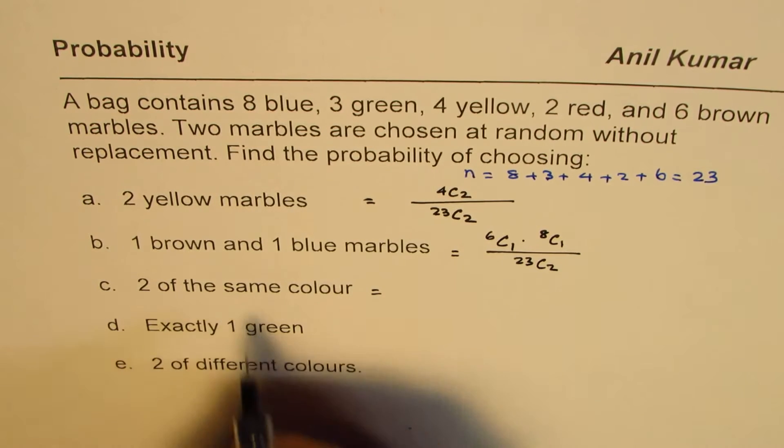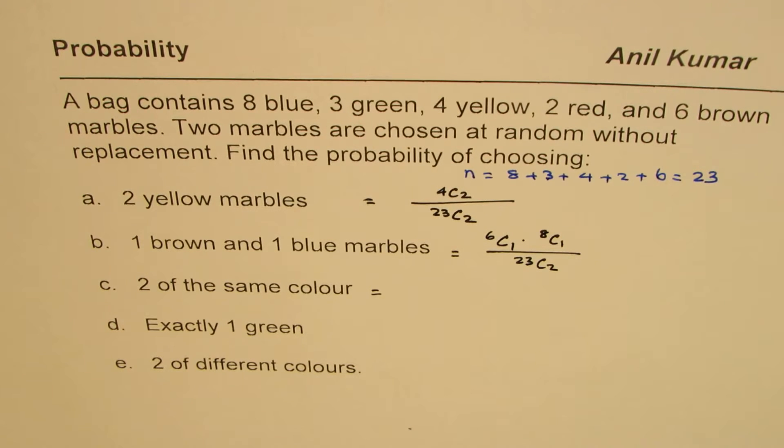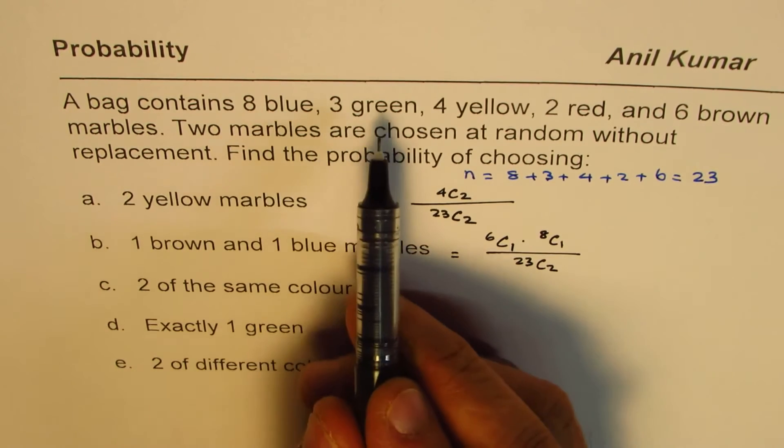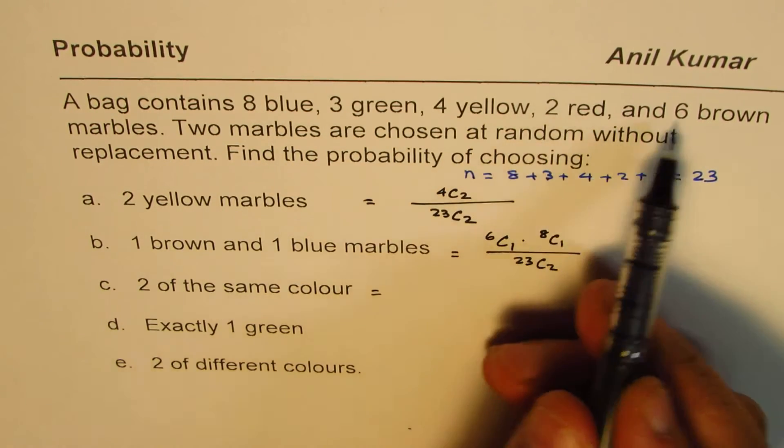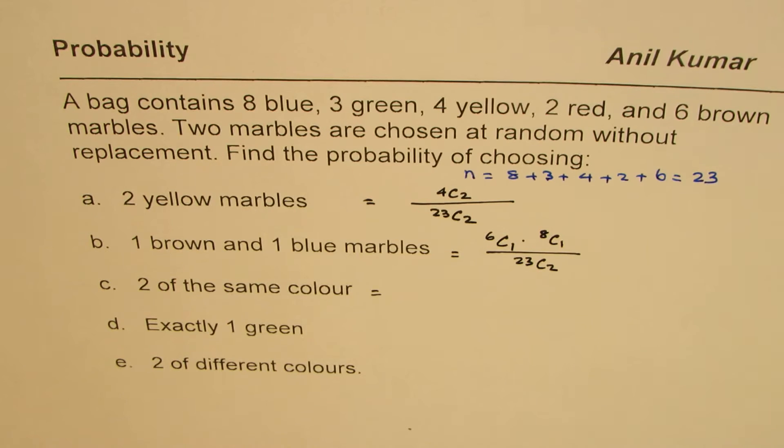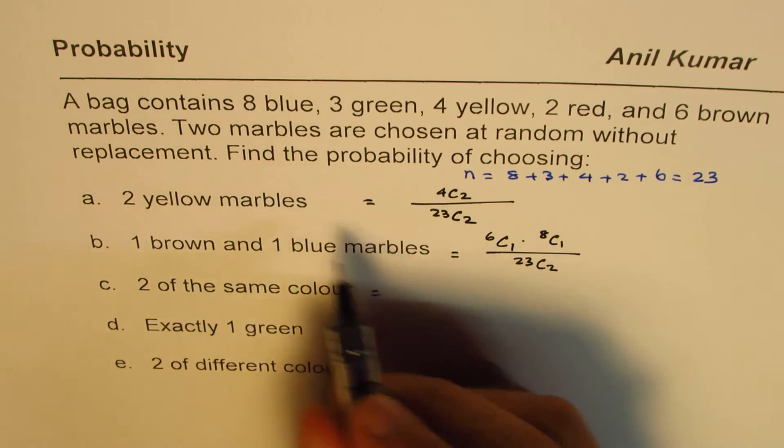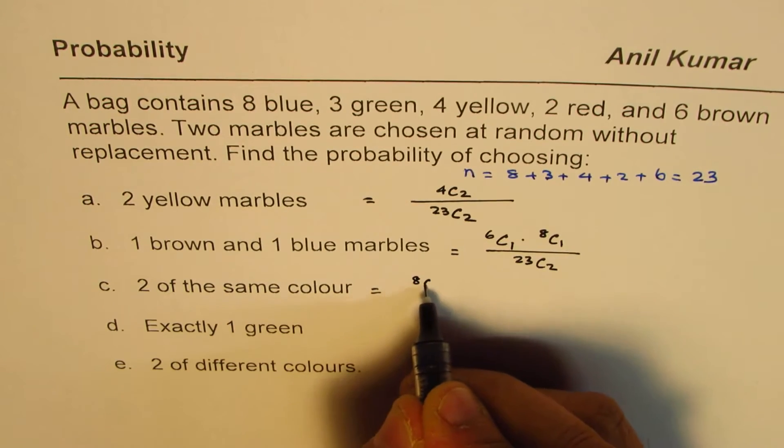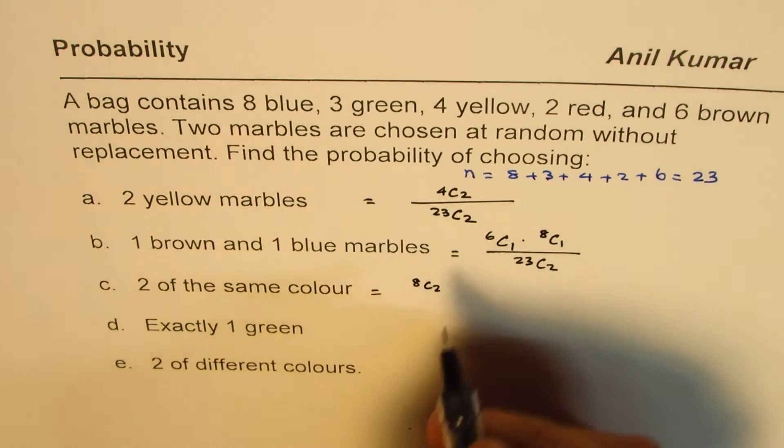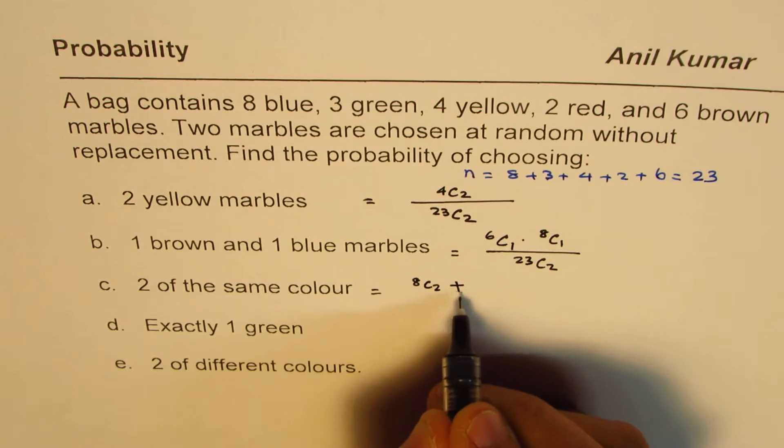Here we have 2 of the same color. So when I say 2 of the same color, what does it mean? It could be 2 blue, 2 green, 2 yellow, 2 red, and 2 brown. So those are all the combinations. So if it is 2 blue, then be 8C2. Or, that means plus. Or means plus.